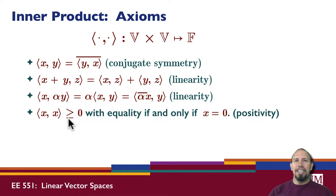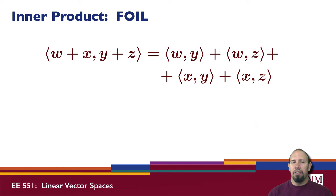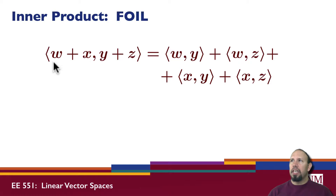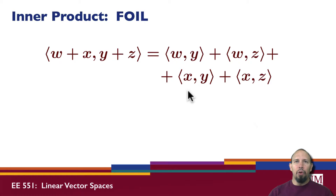With inner products, because of the linearity property, we can get an inner product version of FOIL — firsts, outers, inners, and lasts. When you take the inner product of a sum with a sum, you get four terms. Every term must be multiplied by every other term, just as in standard algebraic expansion.